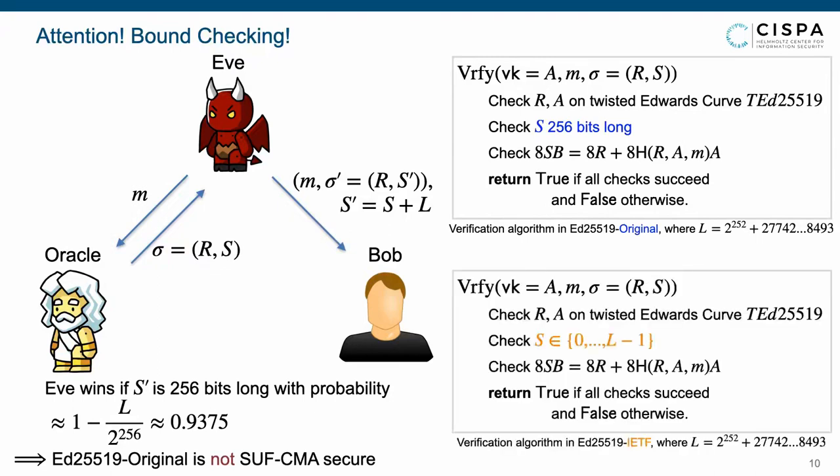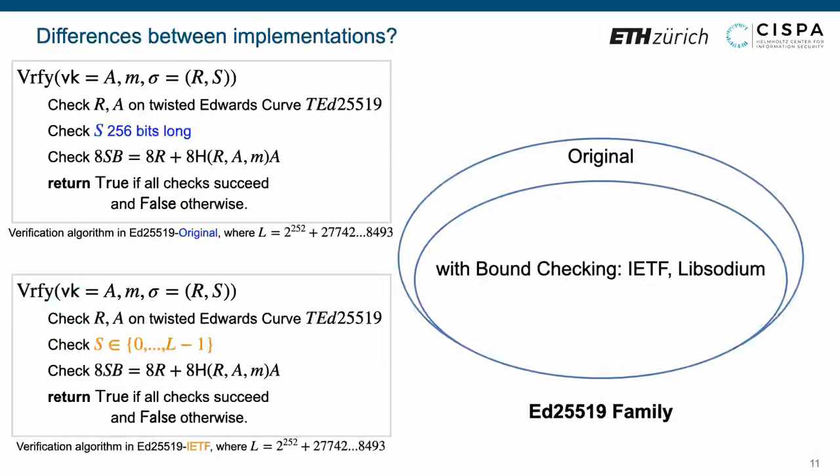However, the IETF and LibSodium versions additionally involve the bounds checking. In addition to the signature validation check, these two versions also ensure the value S in the range from 0 to L-1. Hence, we can observe that Ed25519 original differs from IETF and LibSodium versions in bounds checking, while the original version checks whether S is 256 bits long. The IETF and LibSodium versions check whether S is in the range from 0 to L-1. The relation between these three variants is depicted in the Venn diagram right side.